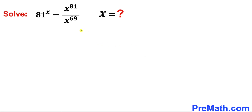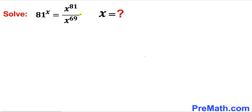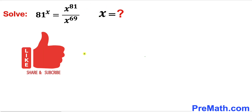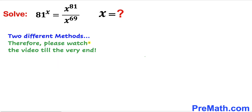Welcome to pre-math. In this video we have got this interesting exponential equation: 81 to the power x equals x to the power 81 divided by x to the power 69, and we are going to solve this equation for x. In this video I am going to share with you two different approaches, so please watch the video till the very end.